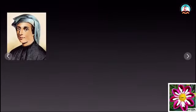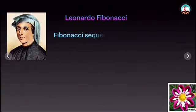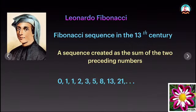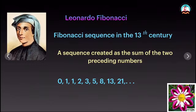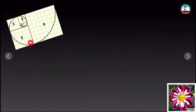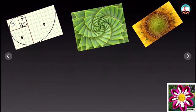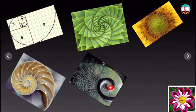Today we are going to look at an interesting mathematician — Leonard Fibonacci. He invented the Fibonacci sequence in the 13th century. A sequence created as the sum of two preceding numbers is called a Fibonacci sequence. Like this: 0+1=1, 1+1=2, 1+2=3, 3+5=8 — it goes on like this as an infinite sequence. If represented on a graph it looks like a spiral, and we can identify this shape in nature — in flowers, sunflowers, shells, and webs.